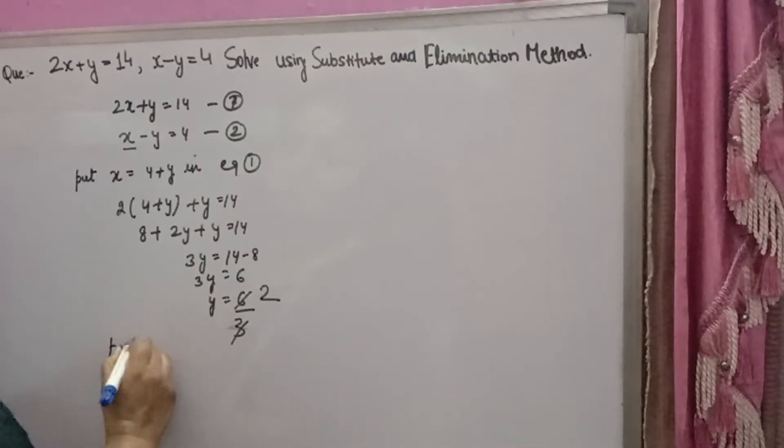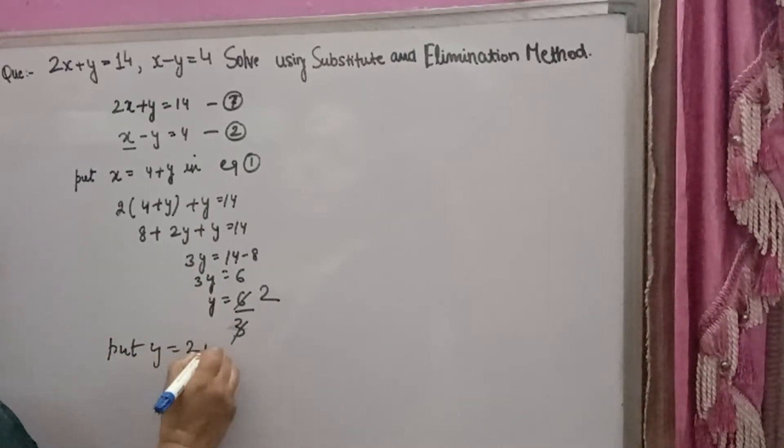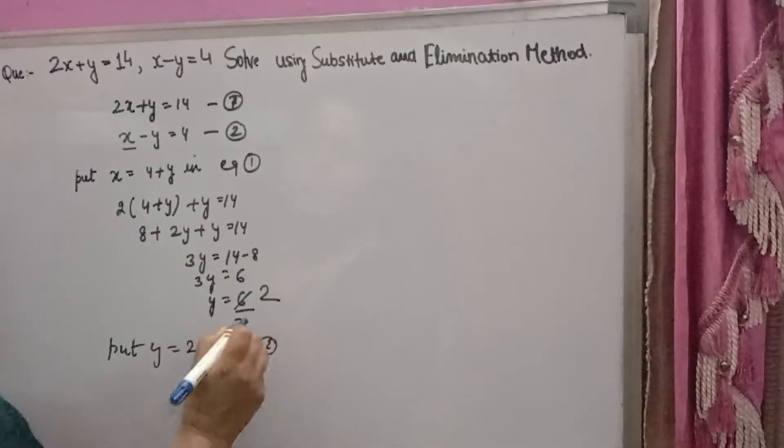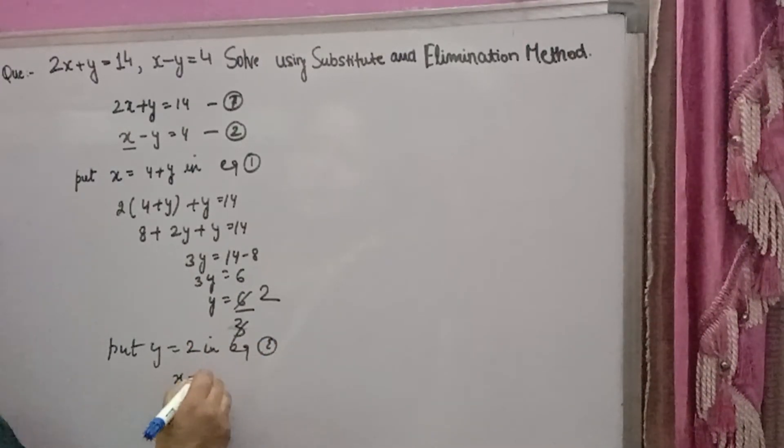Now put y equals 2 in equation 2. You can put in any equation, I am putting in 2. You will get x minus 2 equals 4. X will come 4 plus 2, which is 6. So this is the substitution method.